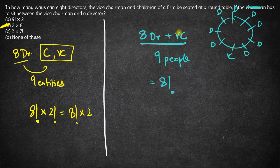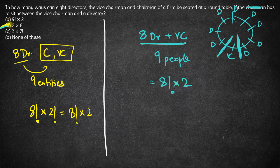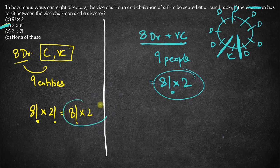Now, what about the chairman? Seating these 10 people with the given conditions gives us 8 factorial into 2 as the final answer.